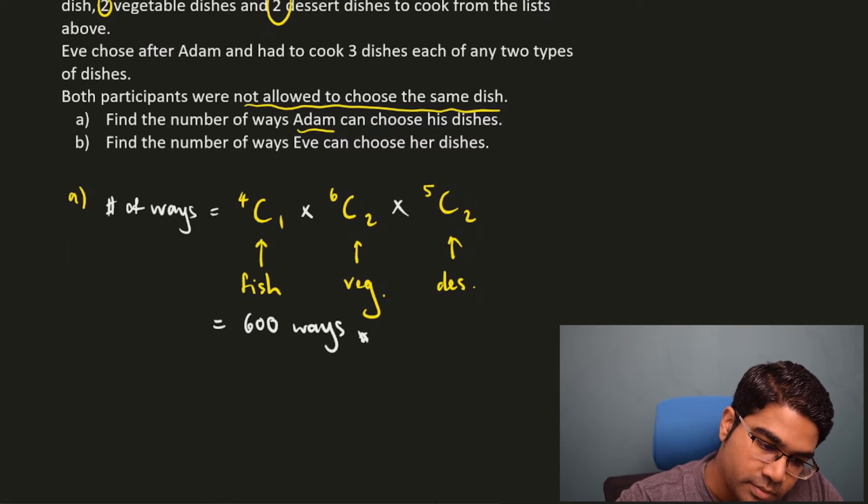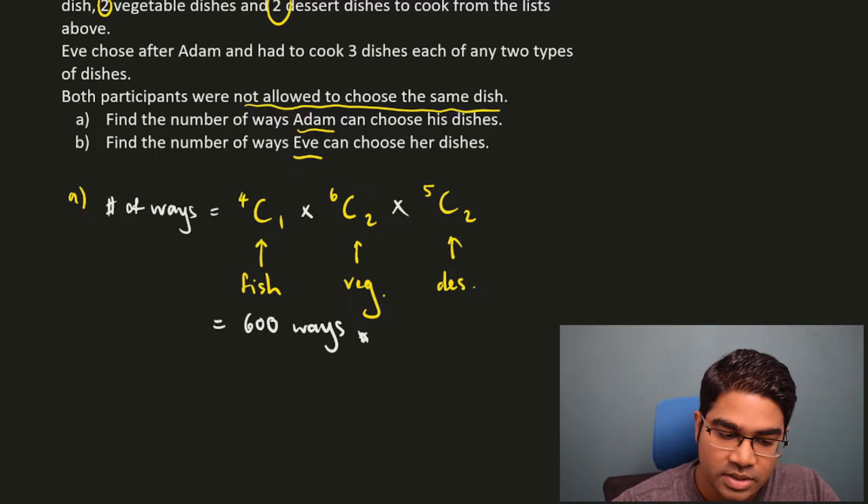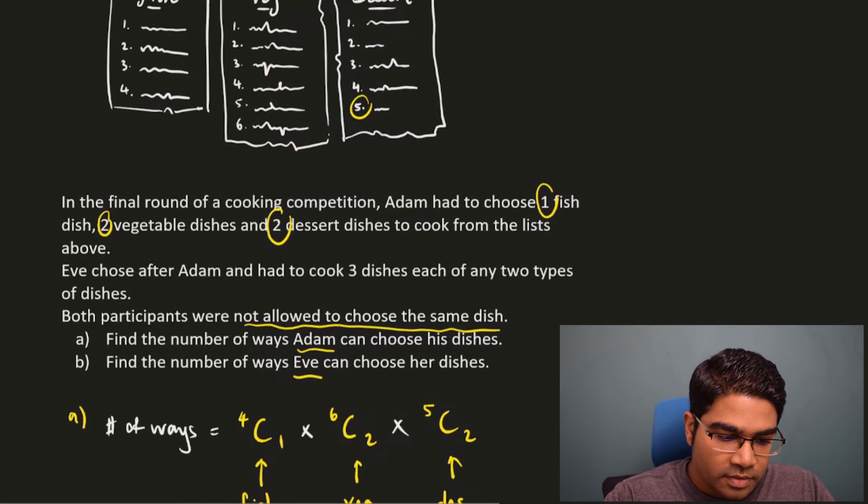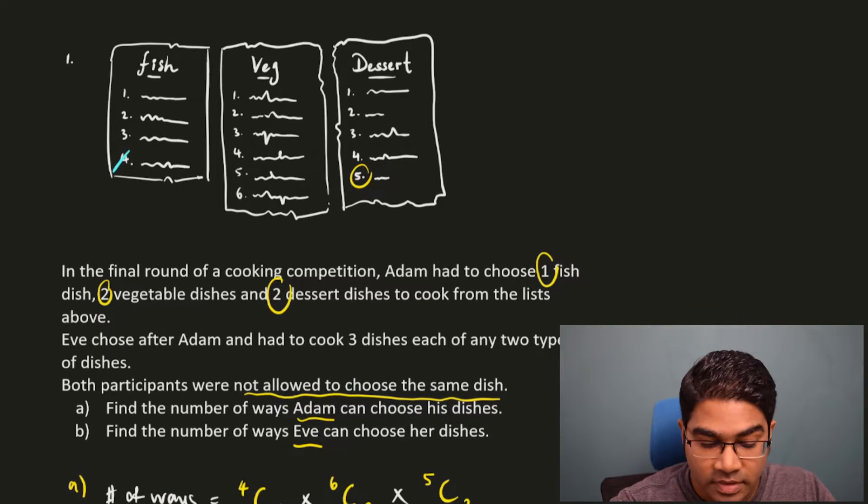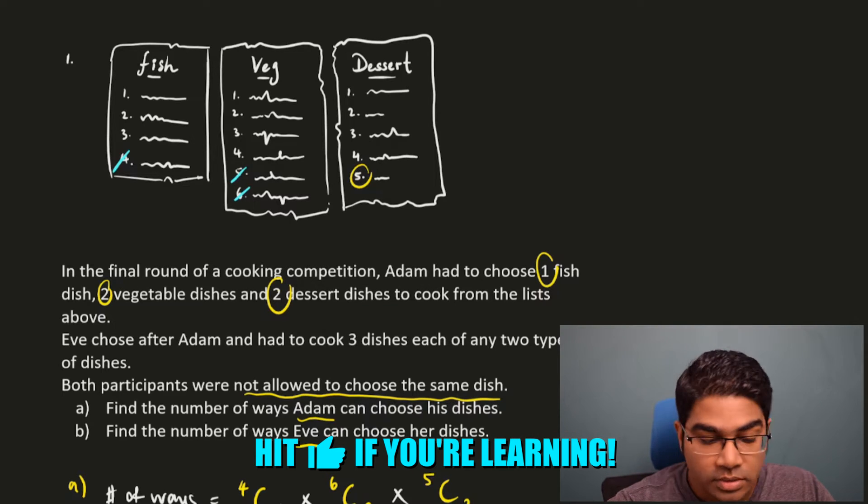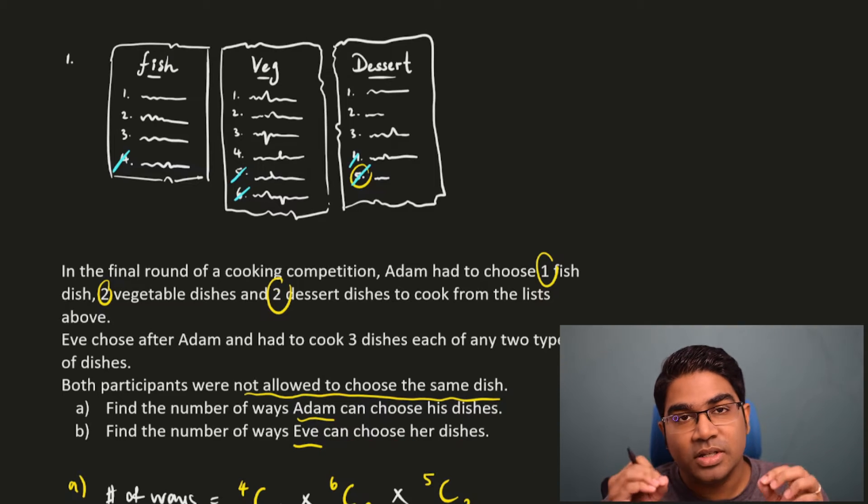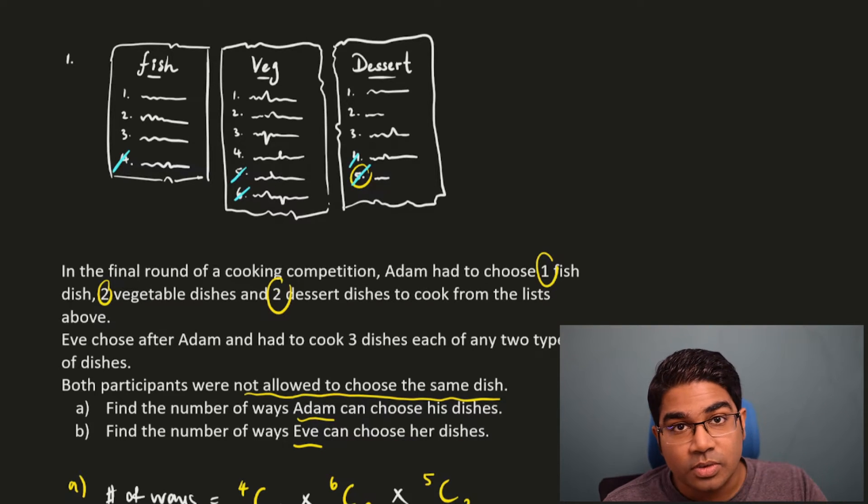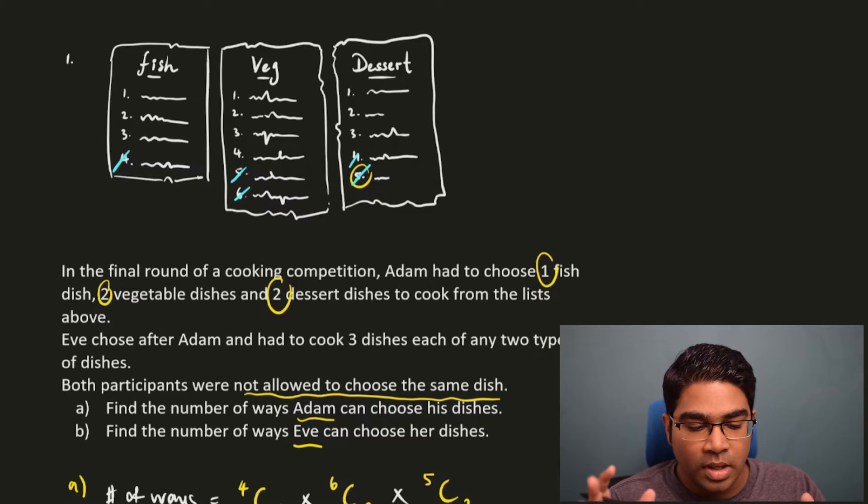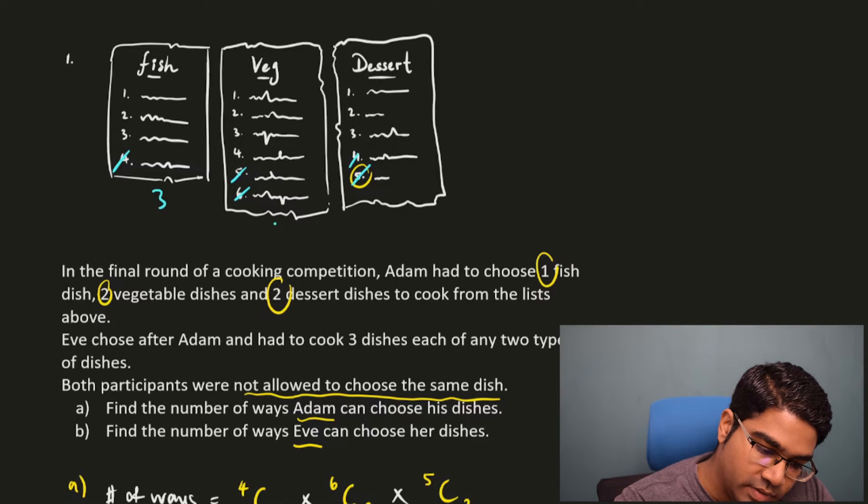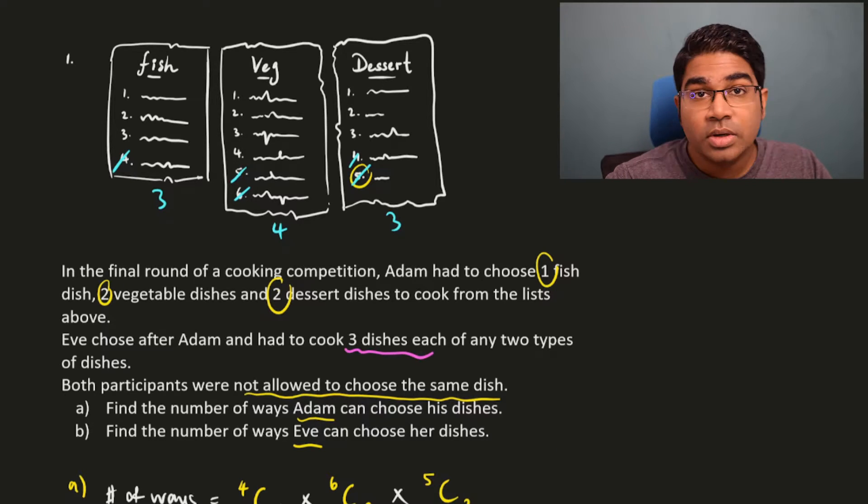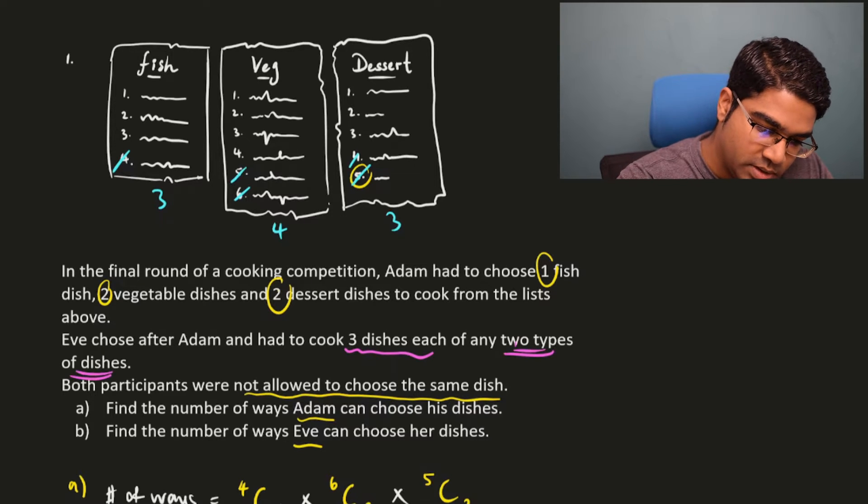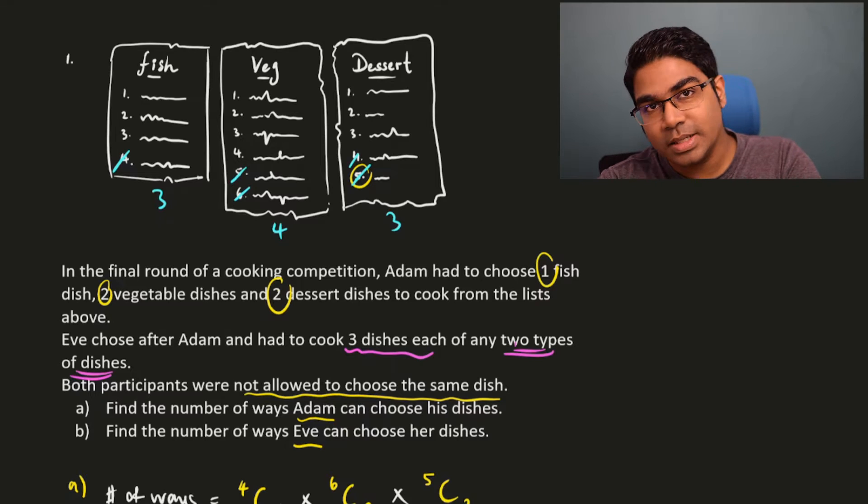Now let's go to the difficult part of the question. Find the number of ways Eve can choose her dishes. Eve is choosing second, which means the number of dishes have now been reduced. Adam has already chosen one fish dish, which means now there are only three left. Two vegetable dishes, so there are only four left. And two dessert dishes, so there are only three left. Again here the order doesn't matter. So we don't have to worry which one he chose. We just have to remember that the total number has been reduced. So the number of dishes left would be three, four and three. Eve has to cook three dishes each from any two types of dishes, which means she can choose either to cook fish and vegetable or fish and dessert or vegetable and dessert. Now we have to do calculation three times.